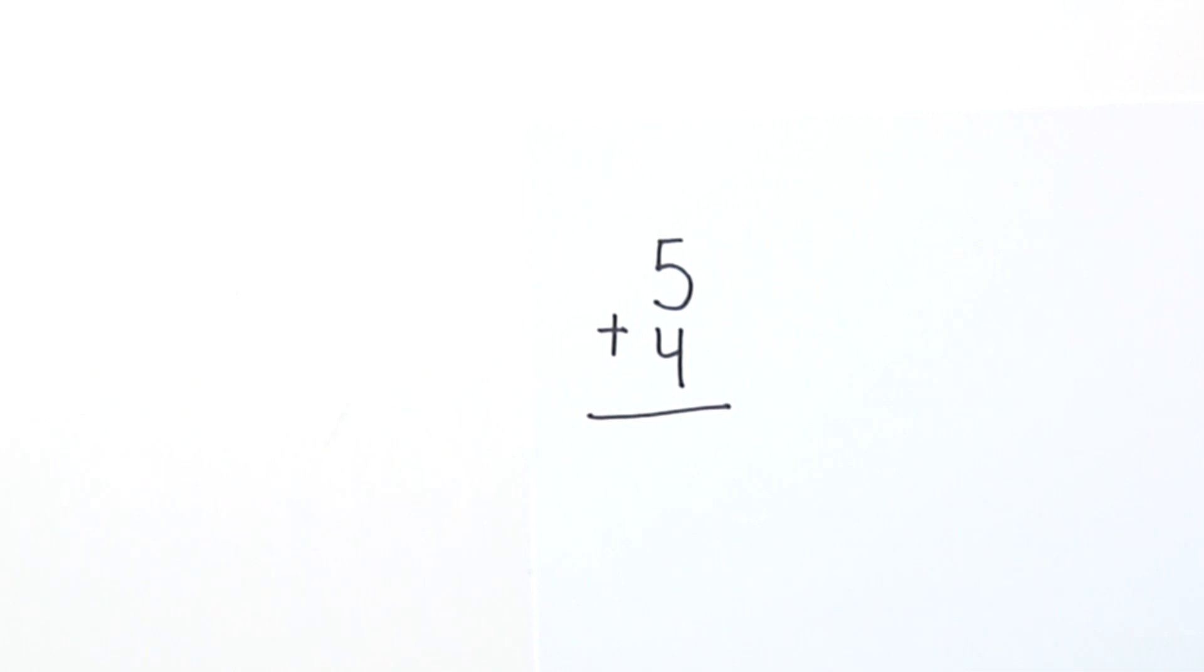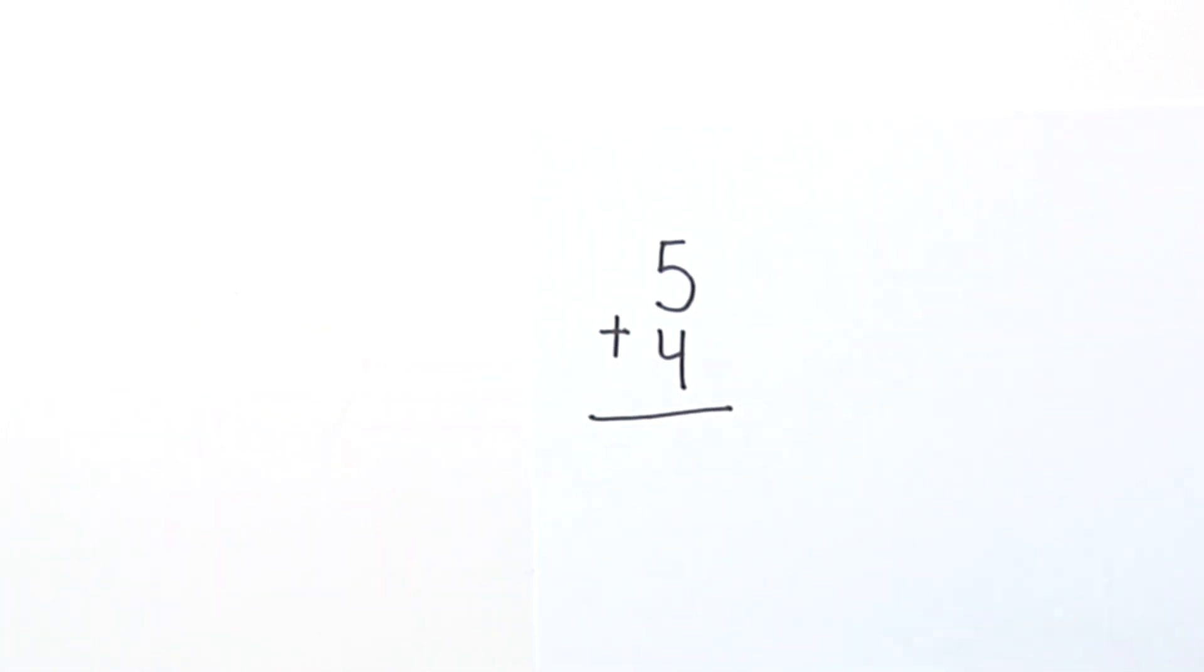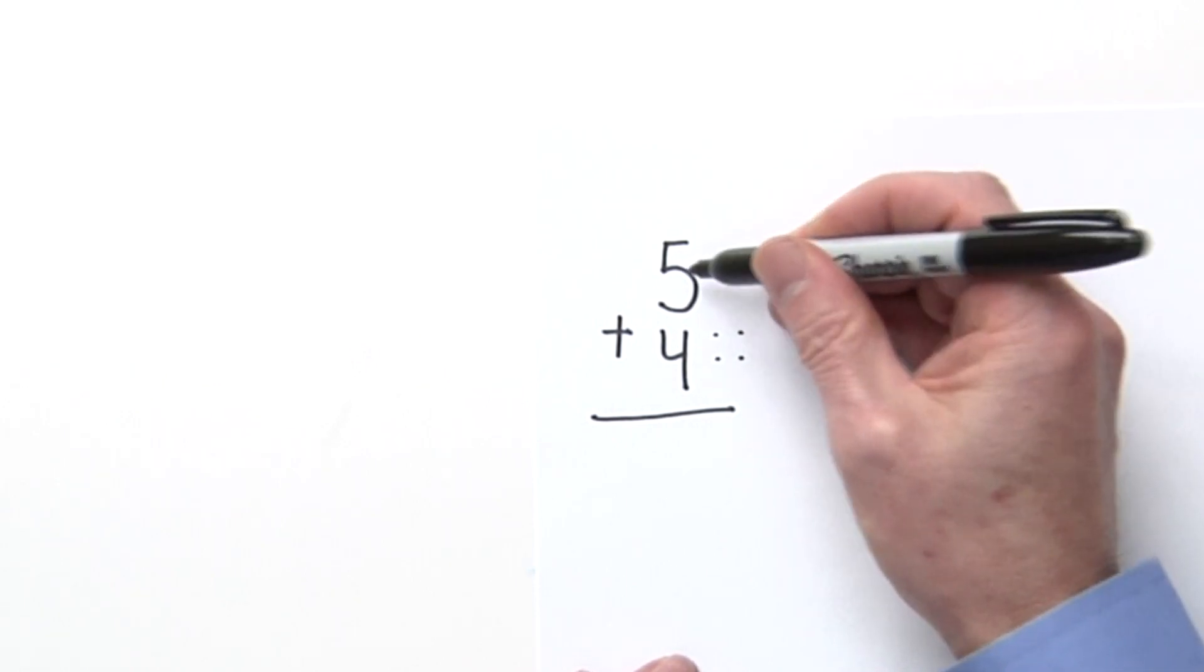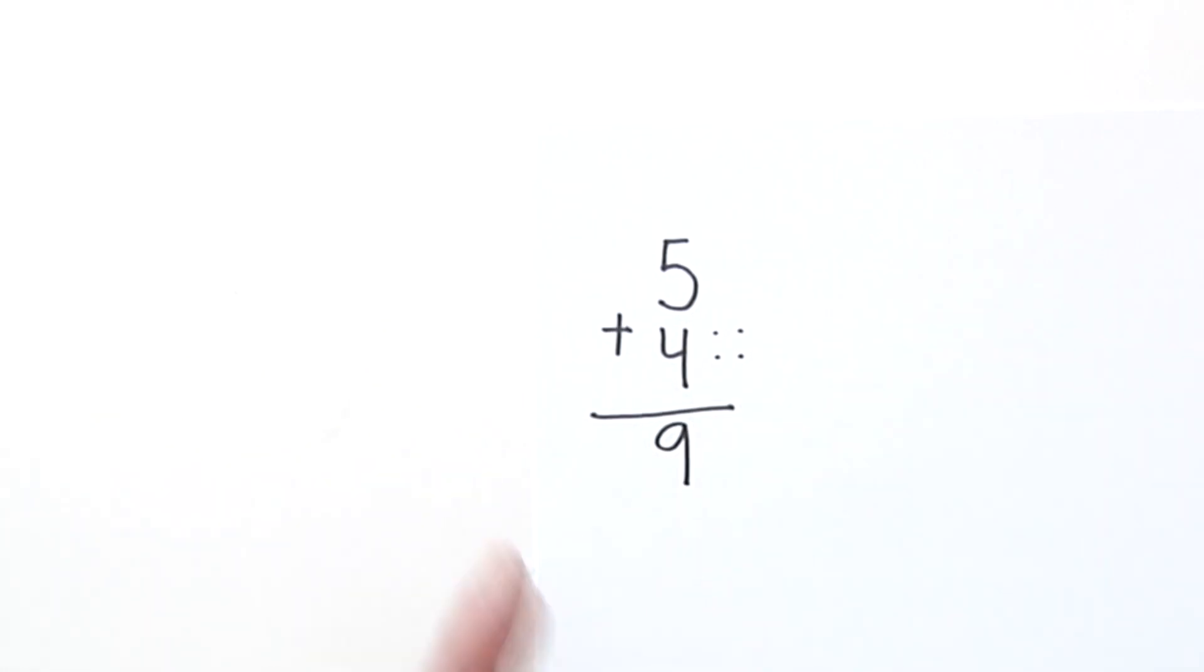This is a single-digit problem: 5 plus 4. Let's go ahead and do it. I always like to add the biggest number first, so that's 5, and here's our 4. I have 5, 6, 7, 8, 9. So that is 9.